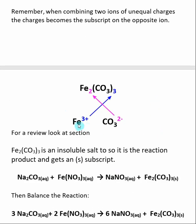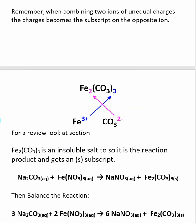We are mixing Fe3+ and CO3 2−. The 3 on the iron ion becomes the subscript on carbonate, giving Fe2(CO3)3. The 2 charge on carbonate becomes the subscript on iron. Let's verify: we have two Fe3+ ions giving a total positive charge of +6, and three CO3 2− ions giving a total negative charge of −6. So the overall charge of the product is neutral. This topic was covered in greater detail during the nomenclature section where we discussed drawing the molecular formula of an ionic compound from a name.